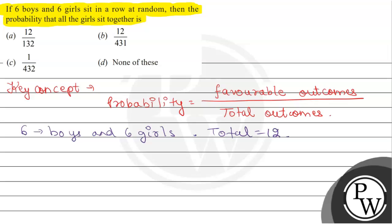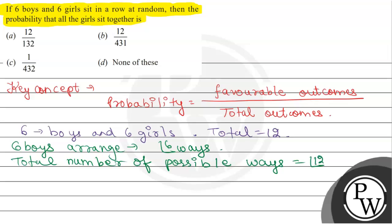First arrange 6 boys with respect to each other. So we can arrange 6 boys in factorial 6 ways. Total number of possible ways to arrange 12 children is factorial 12 ways. And to arrange 6 boys, we have factorial 6 ways.